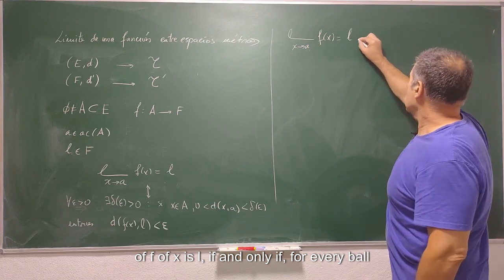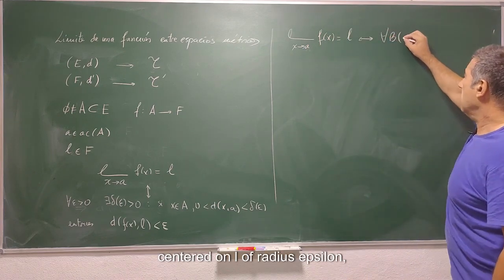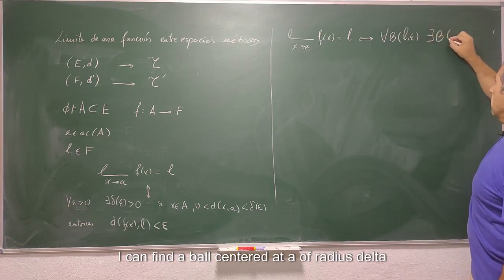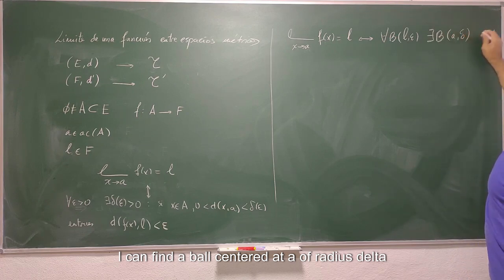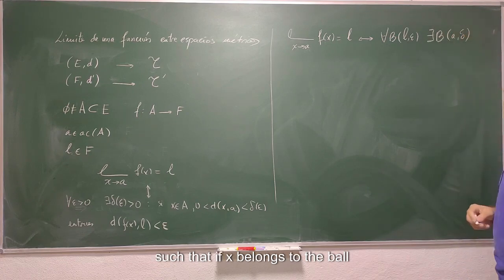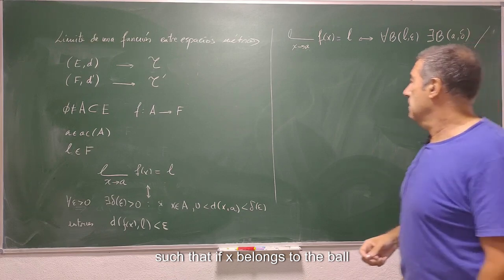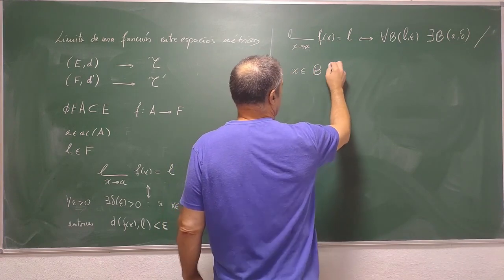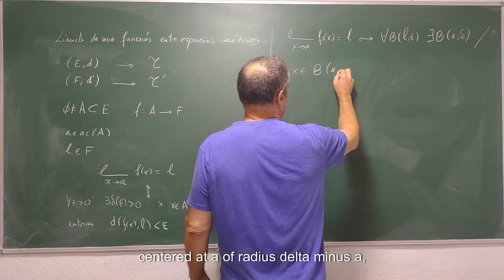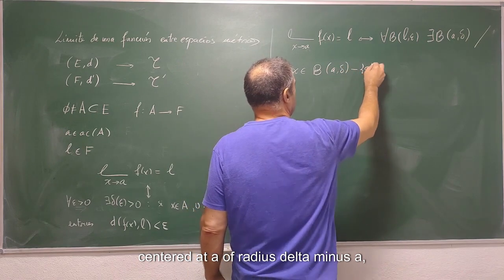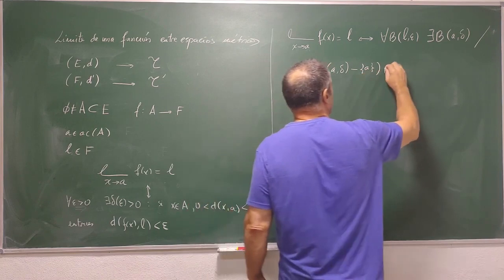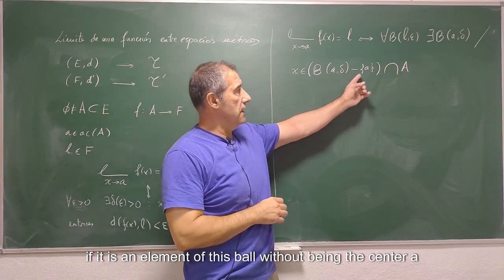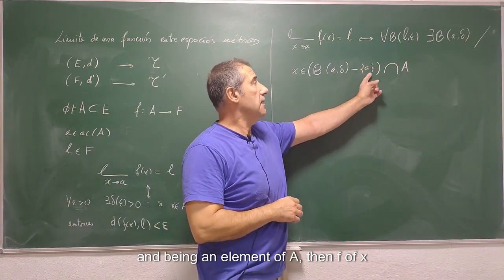Centered on L of radius epsilon, I can find a ball centered at a of radius delta such that if x belongs to the ball centered at a of radius delta minus a intersection capital A, that is, if it is an element of this ball without being the center a and being an element of A.